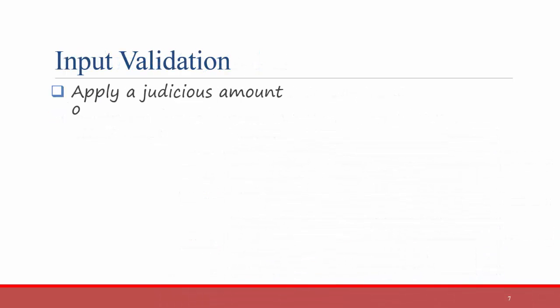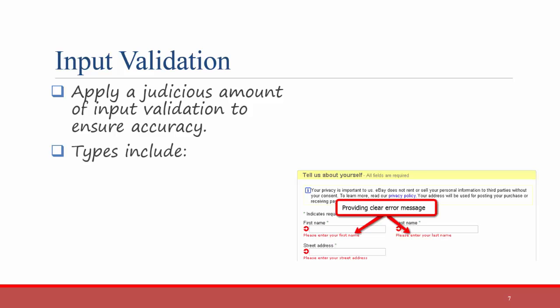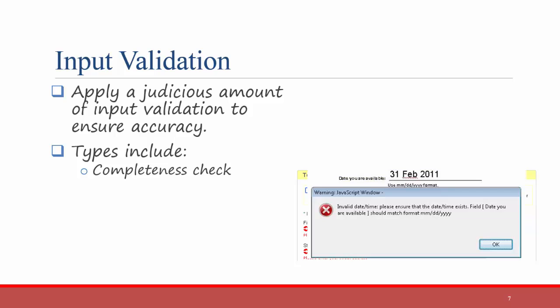Input validation makes sure that the data you are gathering through input is accurate and complete. There are several different types of input validation. These include a completeness check, like those you've seen if you forget to fill in a field on a form, and a format check, making sure that you've typed things in the right format.